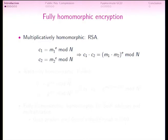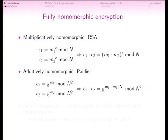For example, in RSA, if you have two ciphertexts for M1 and M2, if you multiply them, you get a new encryption for M1 times M2. And for this, you only need to know the public key, not the private key.